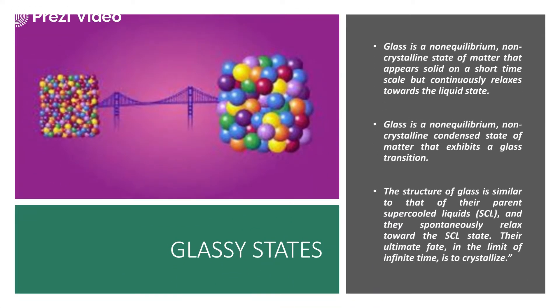Before starting with the glassy states, we have discussed that there are various intermittent stages in the states of matter when the transition takes place from one phase to another phase. For example, in the previous session we discussed about the liquid crystals, which were the intermittent stage when a solid phase gets converted to the liquid phase by melting down. This phase transition for different substances does not take place at one go — it is a very slow process, and the intermittent stage is actually a separate phase of matter.